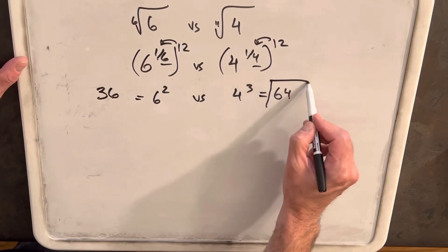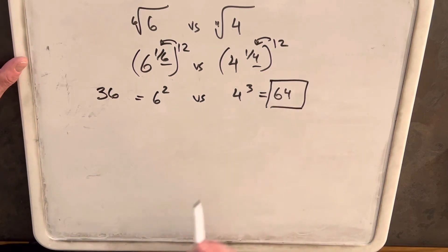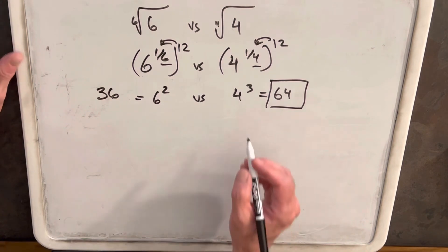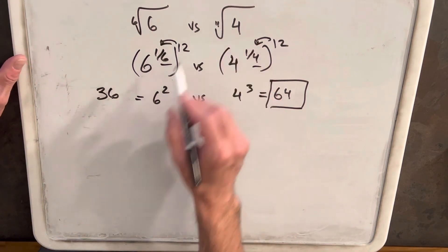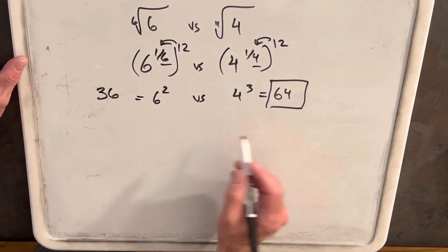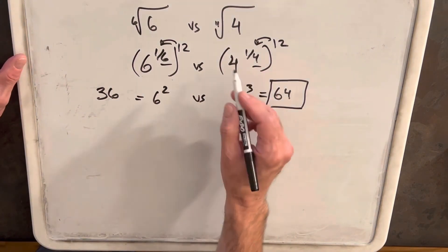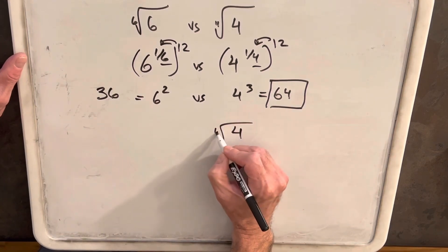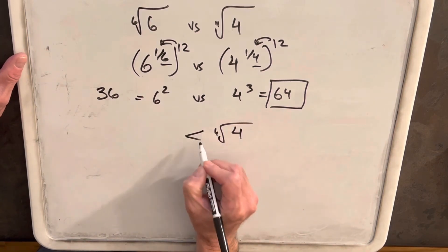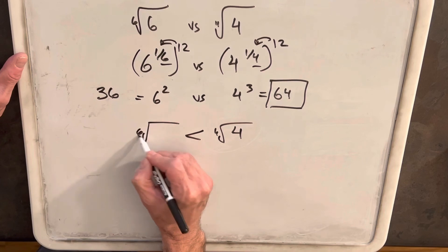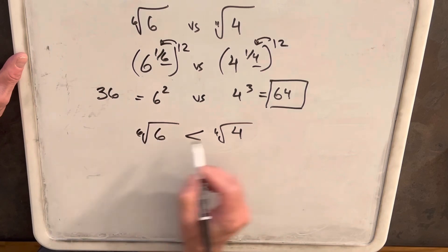So we can say 64 is bigger. We've done the same operations on the right as we've done on the left, so we can conclude that the 4th root of 4 is greater than the 6th root of 6.